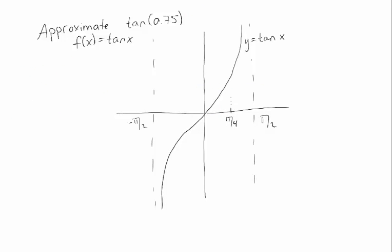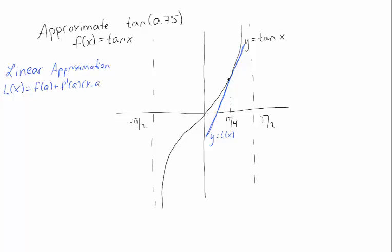Now let's increase complexity and talk about the linear approximation. For the linear approximation, I go to the point I know how to evaluate, and near that point I approximate tangent by a line — the tangent line — that passes through that point and has the same slope as my function. Let's call the linearization L. In your book all these approximations are called capital F, but we'll use L for linear. This is just the tangent line: L(x) = f(a) + f′(a)(x − a), where a = π/4.